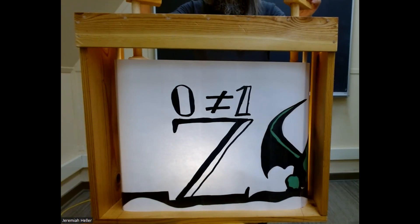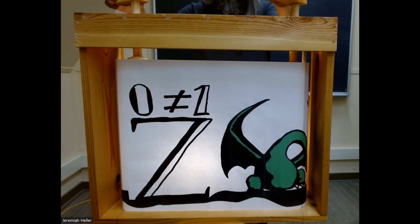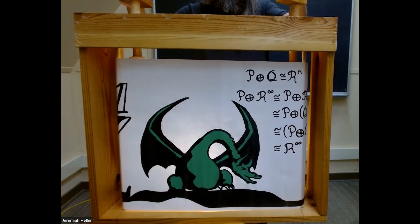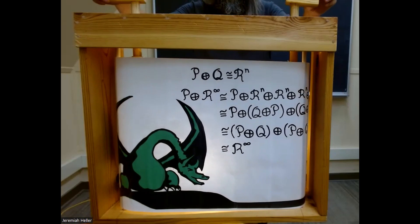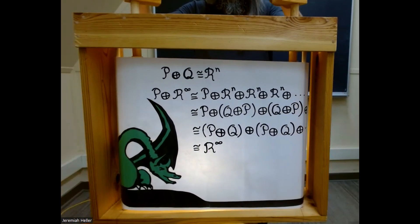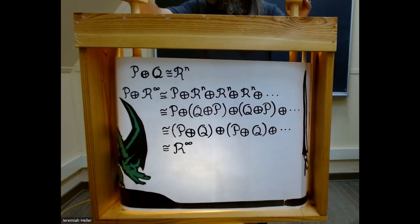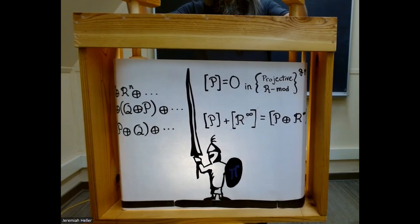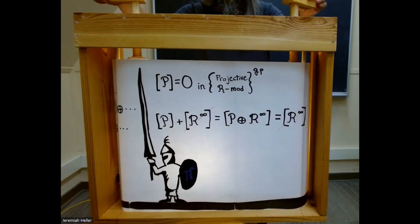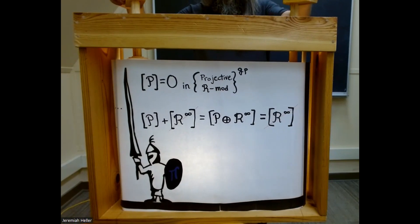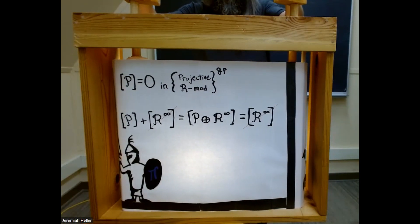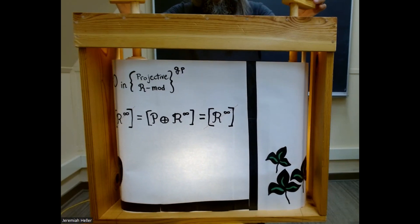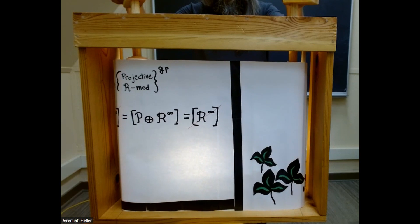An algebraic manifestation of this phenomenon is known as Eilenberg's swindle. The knight's shifting technique works in the presence of infinite sums. A projective R-module becomes free after adding on an infinite rank free module. This implies that the class of the projective module P is actually zero in the group completion of the monoid of isomorphism classes of all projective R-modules. This means that if you define K-theory using all projective modules, you get zero. The moral of the story is that it is essential to allow only finitely generated projective modules in the definition of K-theory.